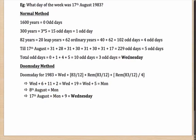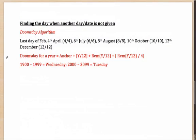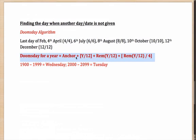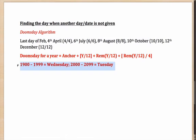As you can see, we got the same answer. The Doomsday method, once you figure it out, is much simpler. The only things to remember are: the formula — anchor plus Y/12 plus the remainder plus remainder divided by 4 — and the anchor years: Wednesday for the previous century, Tuesday for the current century.